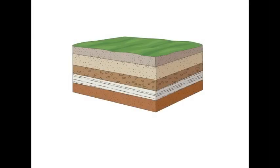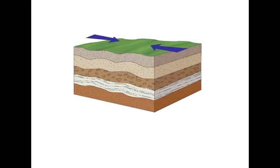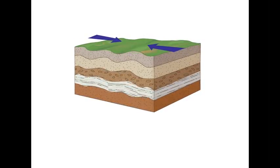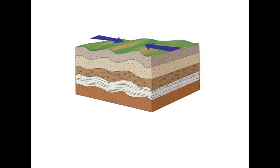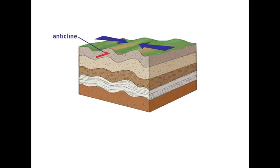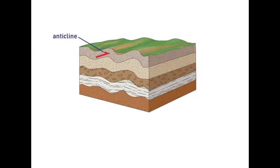How Earth's Surface Changes: When two plates are pushing against each other, rock can fold due to compression. An anticline is an upward fold that forms arches. A syncline is a downward fold that forms valleys.